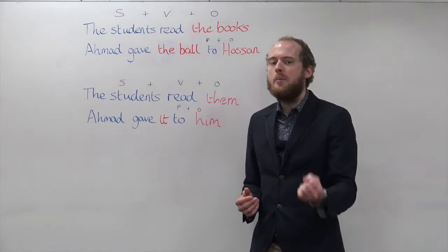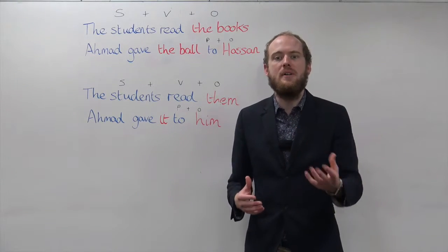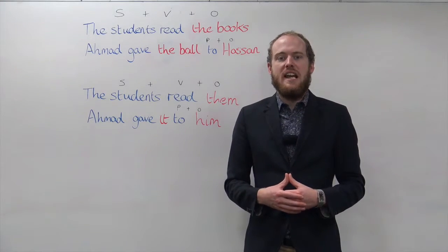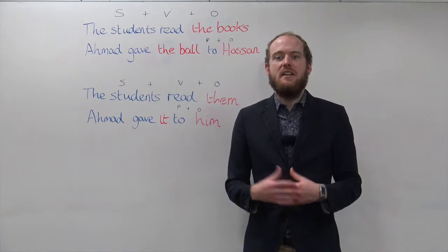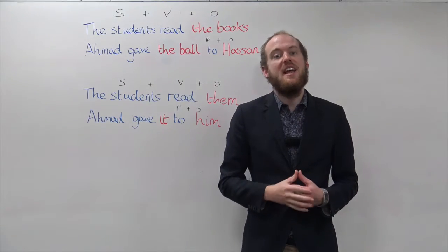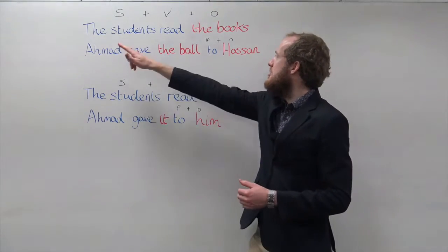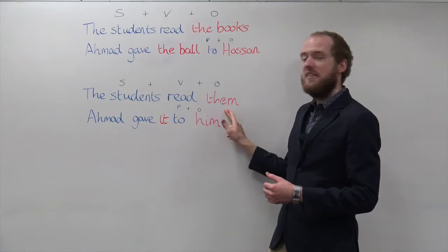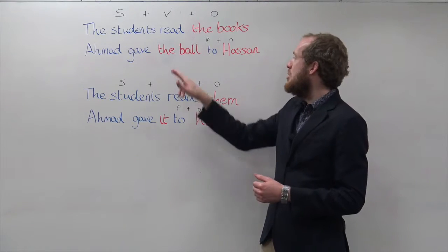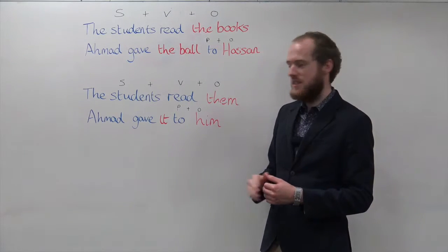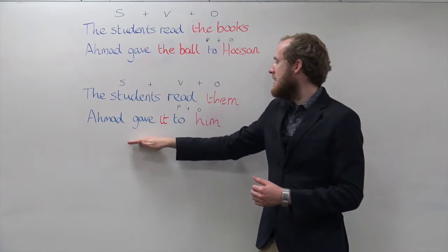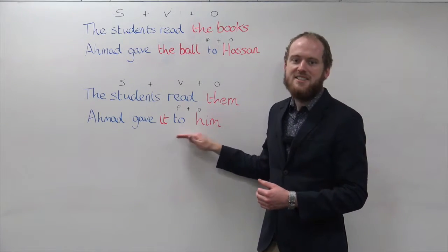Object pronouns are the pronouns that come in place of the object. If we replace the objects of these sentences with pronouns, they become: 'The students read the books' — the books becomes 'them' — 'The students read them.' And the ball and Hassan become 'it' and 'him', so: 'Ahmed gave it to him.'